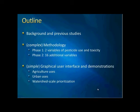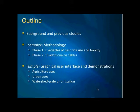The outline is that I will start with background and previous studies, followed by the methodology. As you may already know, we have two phases in this project. Phase one generates a preliminary or initial priority list by considering only two parameters: pesticide use data and toxicity data. Phase two makes monitoring recommendations for each prioritized pesticide from phase one with more variables. Then I will give a demonstration of the graphical user interface, covering agricultural uses, urban uses, and watershed-level prioritization.